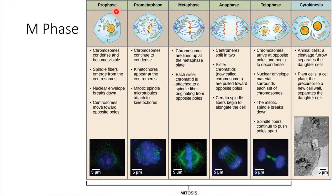During prophase, there are a couple of key things that happen. For one, the nuclear envelope breaks down. That has to happen — if we're going to pull these sets of chromosomes apart into two different regions, we have to get rid of that nuclear envelope to be able to move things around. So the nuclear envelope breaks down.